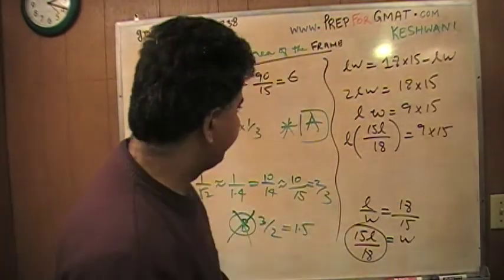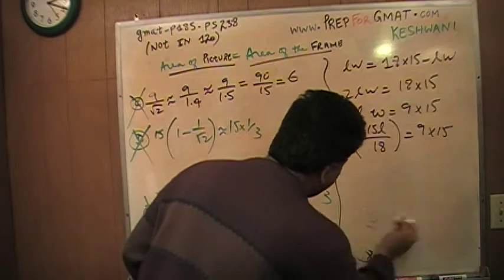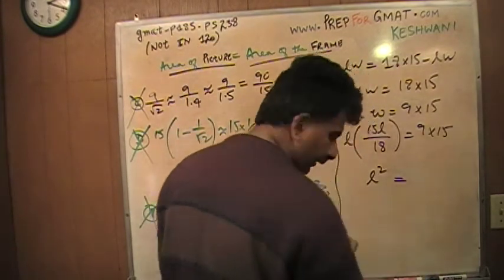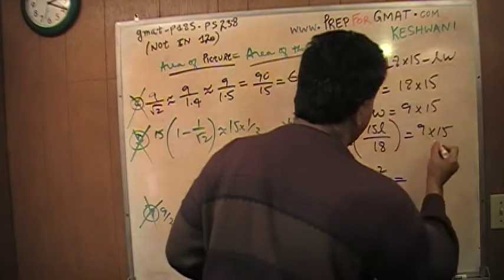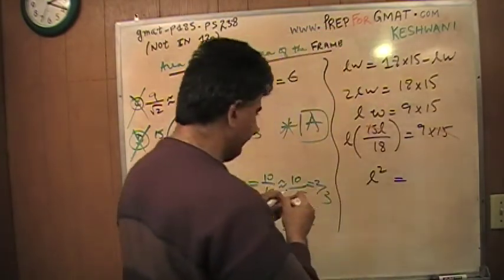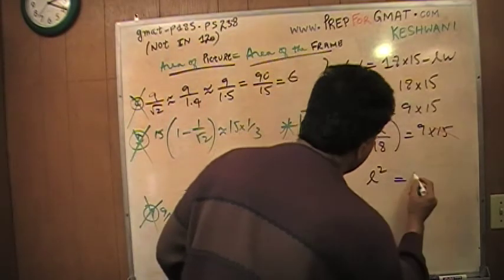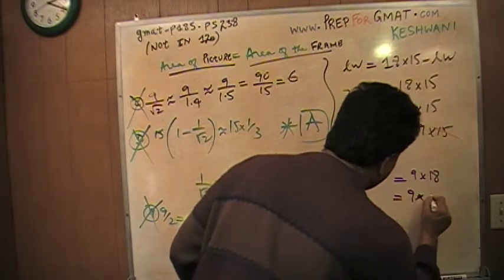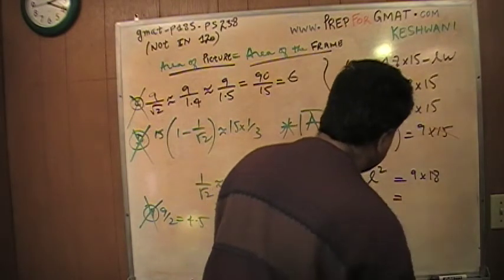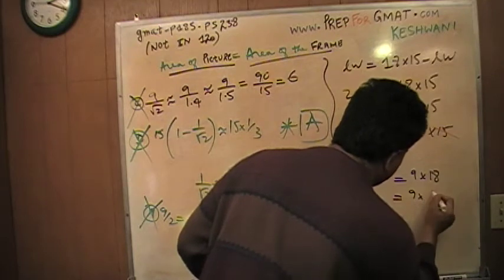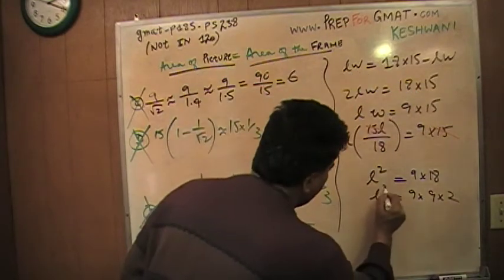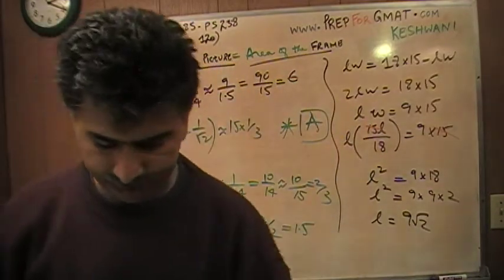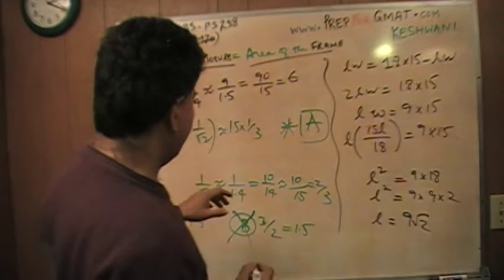L times L is L squared. This 15 is going to cross out with that 15. That tells me L squared equals 9 times 18, which is same as 9 times 9 times 2. That's your L squared. Therefore L is 9 times √2. Et voila! The answer choice is A, as I told you before.